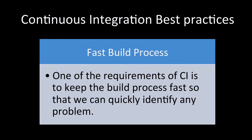Then we need a fast build process. If we want to run a build with every commit, our build should finish quickly so we can quickly identify any problem and get early feedback. The build process has to be fast — a developer should not be waiting an hour for a build to finish. If it finishes within 15 to 20 minutes, that is considered a fast enough build.